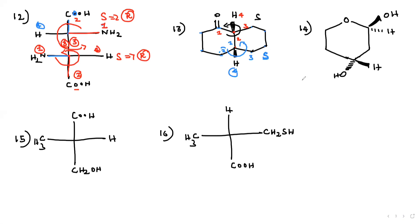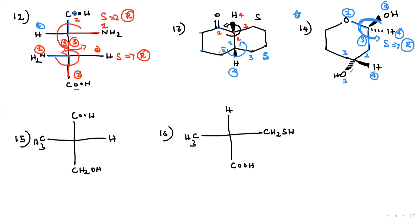Very very important. Question 14 is also very important — please note. This is carbon, this is carbon, this is carbon, this is carbon — this is second, this is third, this is fourth group. Rotation: 1, 2, 3. Anti-clockwise — this is S. Fourth group in wedge — you have to convert to R. The answer is R. Then again: this is one, this is two, this is three, this is four. Rotation: anti-clockwise — S, convert to R. The answer is R.